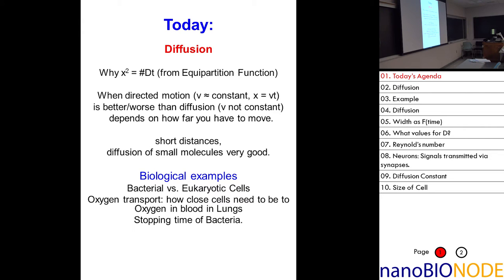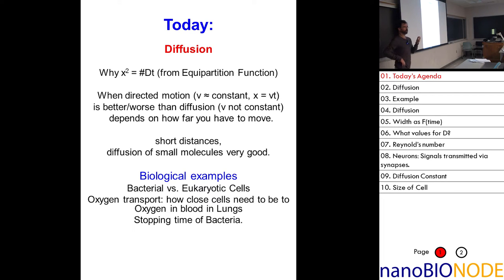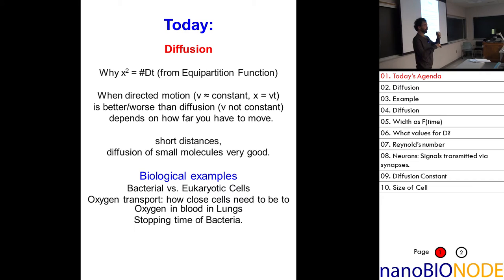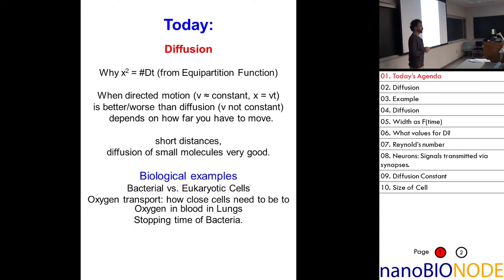Does diffusion require an external source of energy? No — it is an external source in that water molecules are hitting it randomly, but it's not an external source in the sense of ATP driving it. So when you only have to go short distances, you can rely on diffusion — you don't need any external source of energy, just thermal energy.